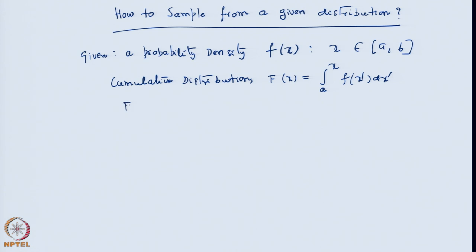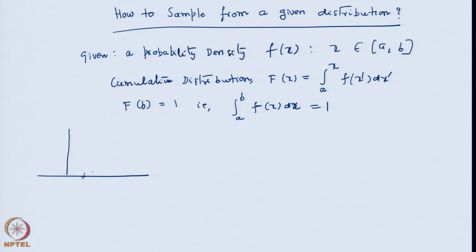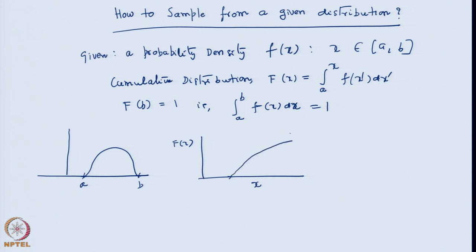We know that F(b) should be equal to 1, since the integral from a to b of f(x) dx equals 1. So if f(x) has some shape from a to b, then the cumulative plotted as a function of x will be 0 before a and will approach 1 at b. Given this information and the knowledge that the maximum value of F(x) is 1, this enables us to sample from the original distribution f(x).